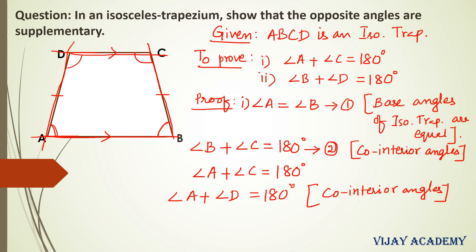Now let us substitute equation 1 into equation 3. Let us replace angle A by angle B. So, replacing angle A by angle B, we get angle B plus angle D equals 180 degrees. So now we got both the proofs, the first and the second. From this we can conclude that in an isosceles trapezium, the opposite angles are supplementary. Hence proved.